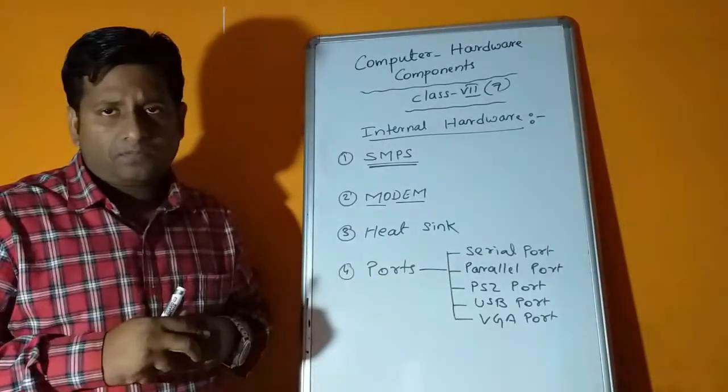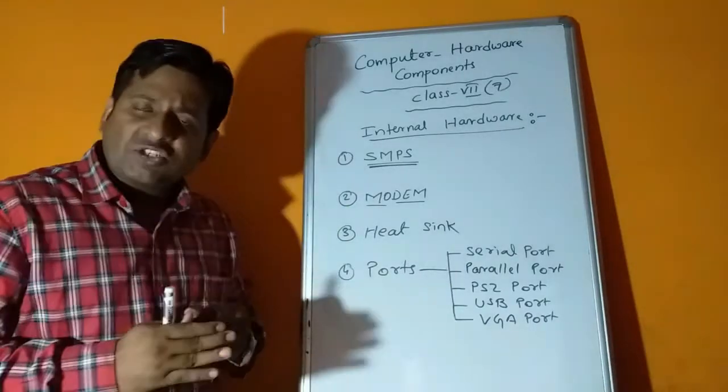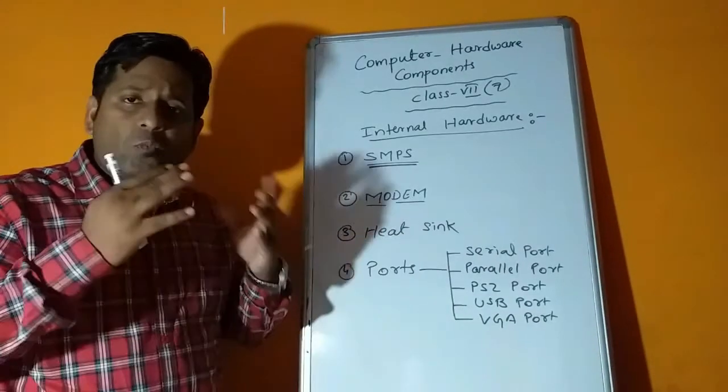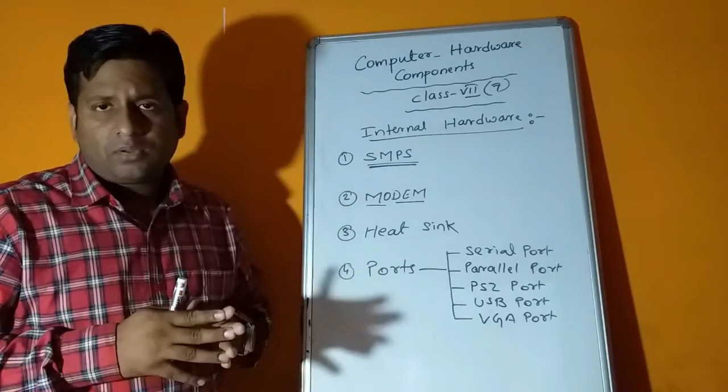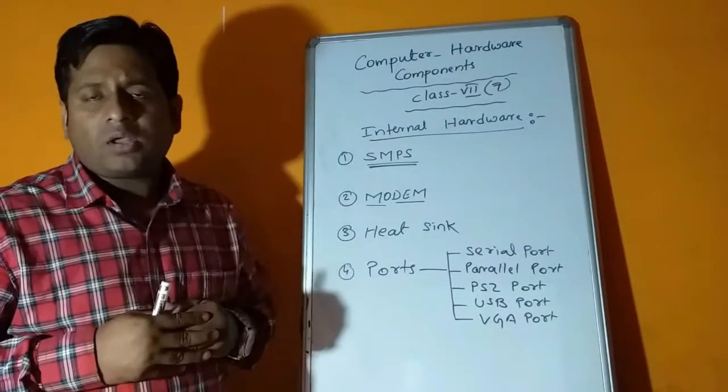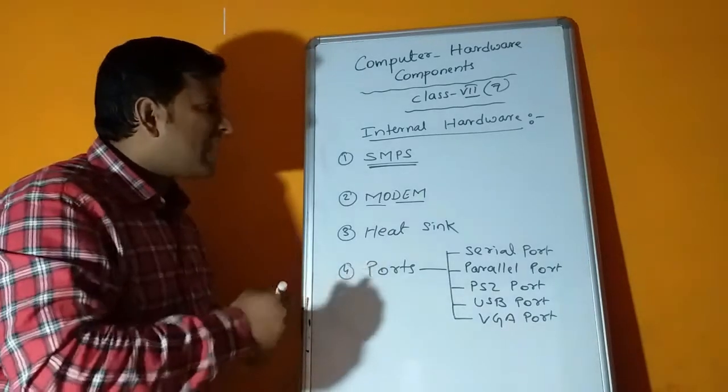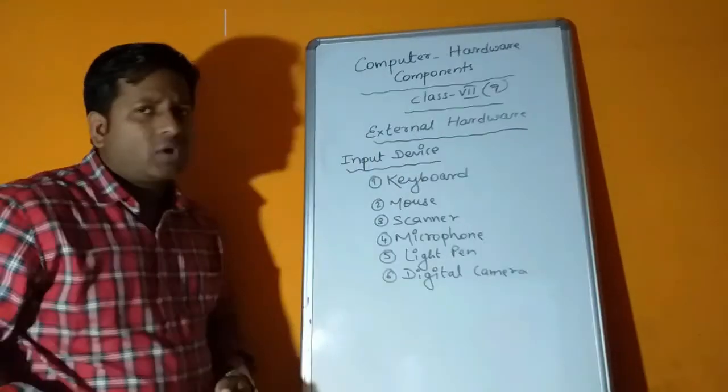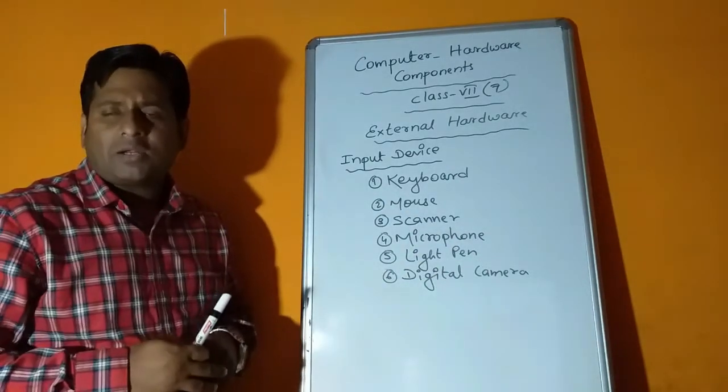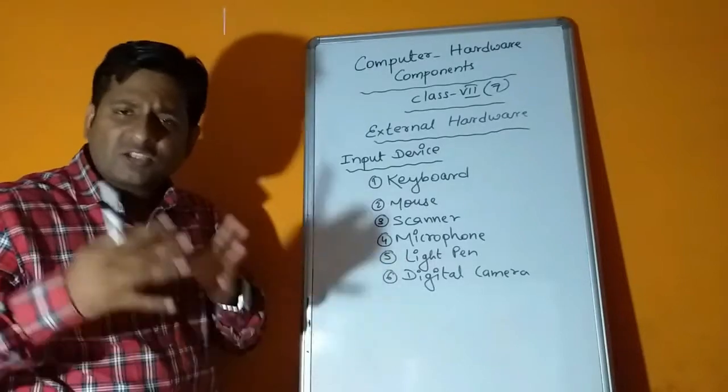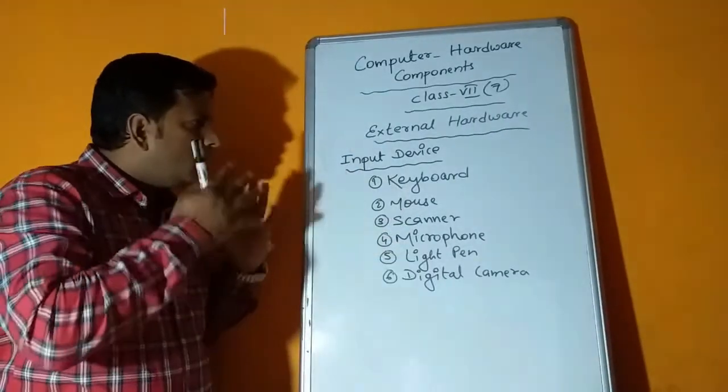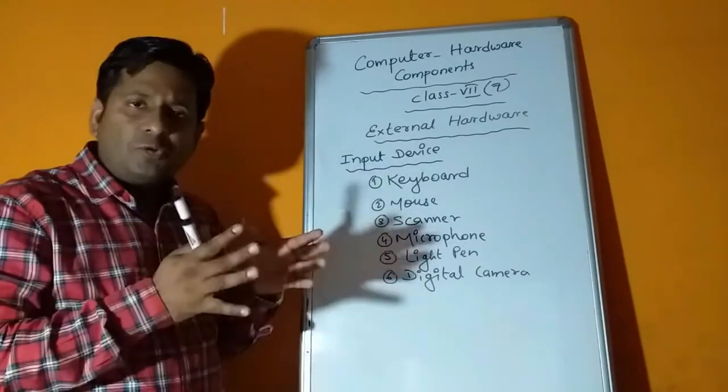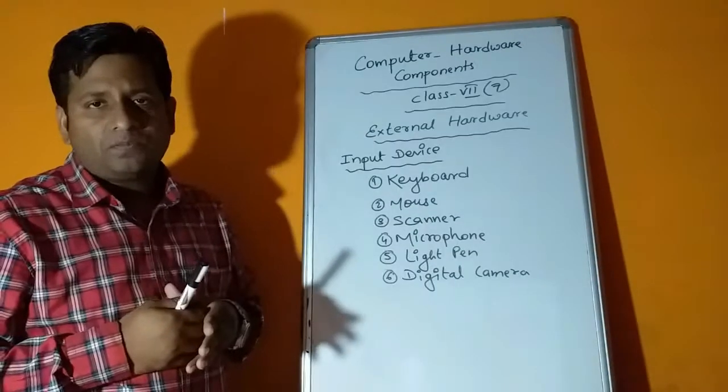These are the total list of internal hardware components. Now we have another part that is external. External means devices which are supporting the internal hardware to make our work convenient and easier. External hardware components are categorized in different parts like input device, output device, and storage device. First we will come to input devices.